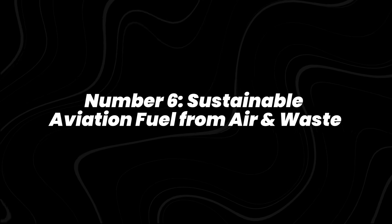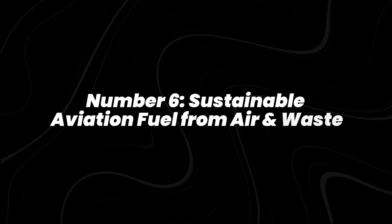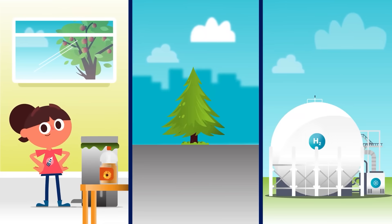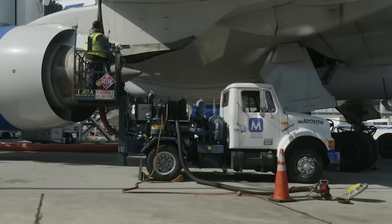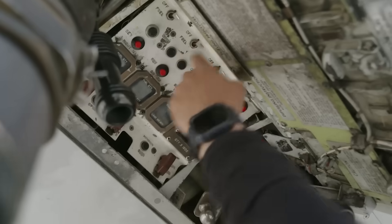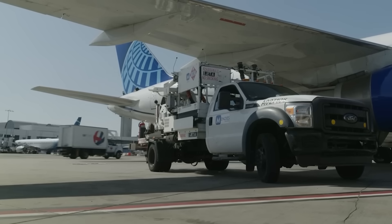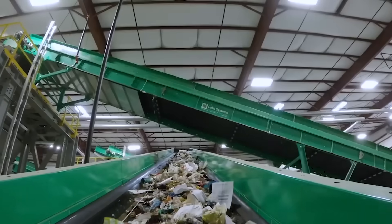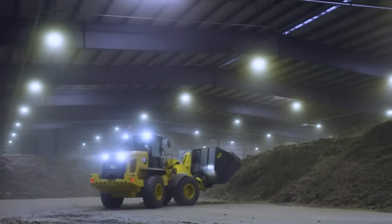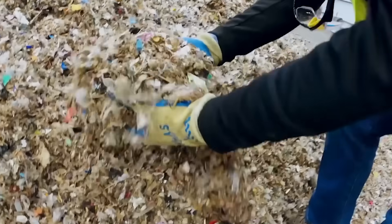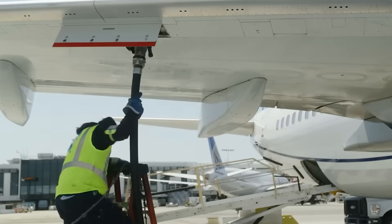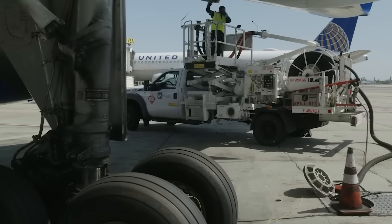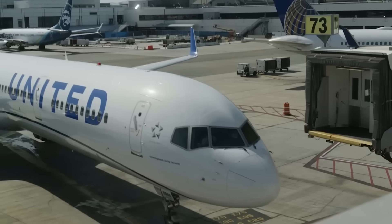Number 6, sustainable aviation fuel from air and waste. Sustainable aviation fuel, SAF, made from captured CO2 and renewable energy, is moving from pilot to industrial scale. Processes like Fischer-Tropsch synthesis use atmospheric CO2 or waste gases combined with green hydrogen to produce liquid hydrocarbons compatible with existing aircraft engines. In 2025, plants in Europe and North America began producing small but commercially viable volumes.